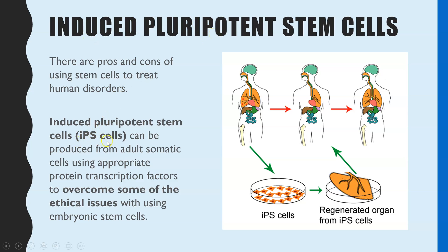Induced pluripotent stem cells are often abbreviated as iPS cells. What these are is when you take a somatic cell — meaning a body cell — from an adult who is giving consent. That could just be a skin cell or cheek cells, so they are easy to access. You can then manipulate the DNA inside those cells by using appropriate transcription factors. Transcription factors are molecules which can allow transcription to either occur or not occur for particular genes. If you turn on all the genes again in a cell, it is no longer a specialised cell — you've induced that body cell to become pluripotent again. That cell can then potentially be used for treatments. In this way, the ethical issues are overcome: there's no cloning involved and no embryos are destroyed.